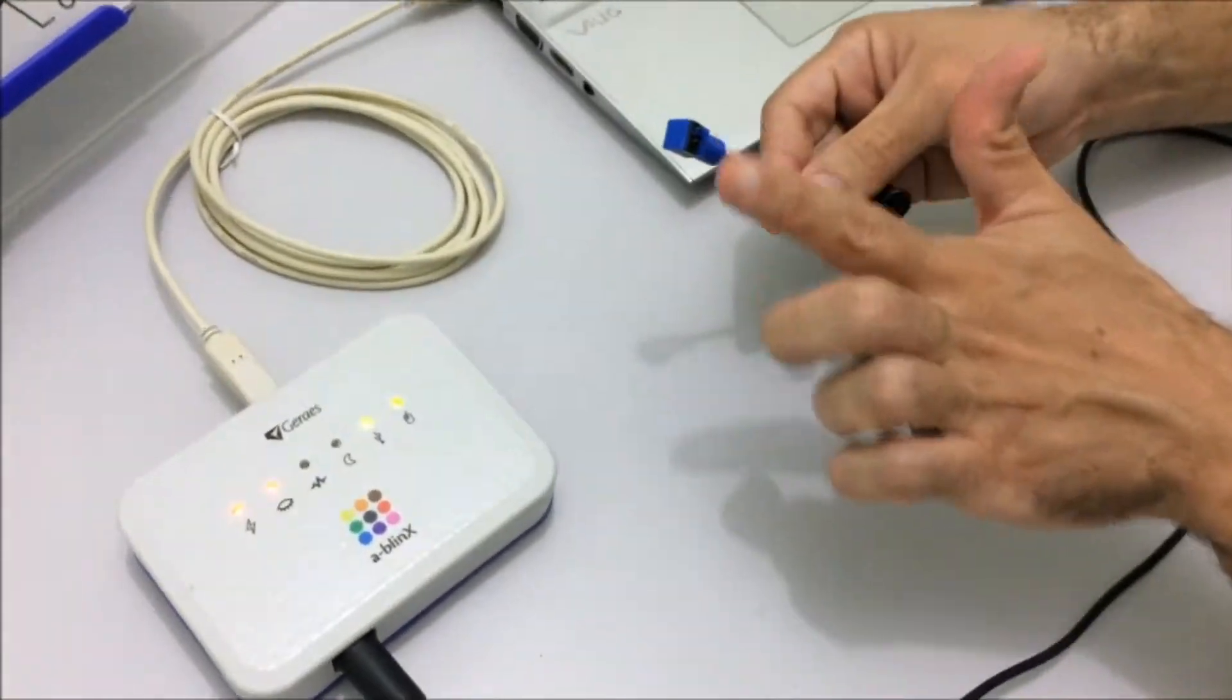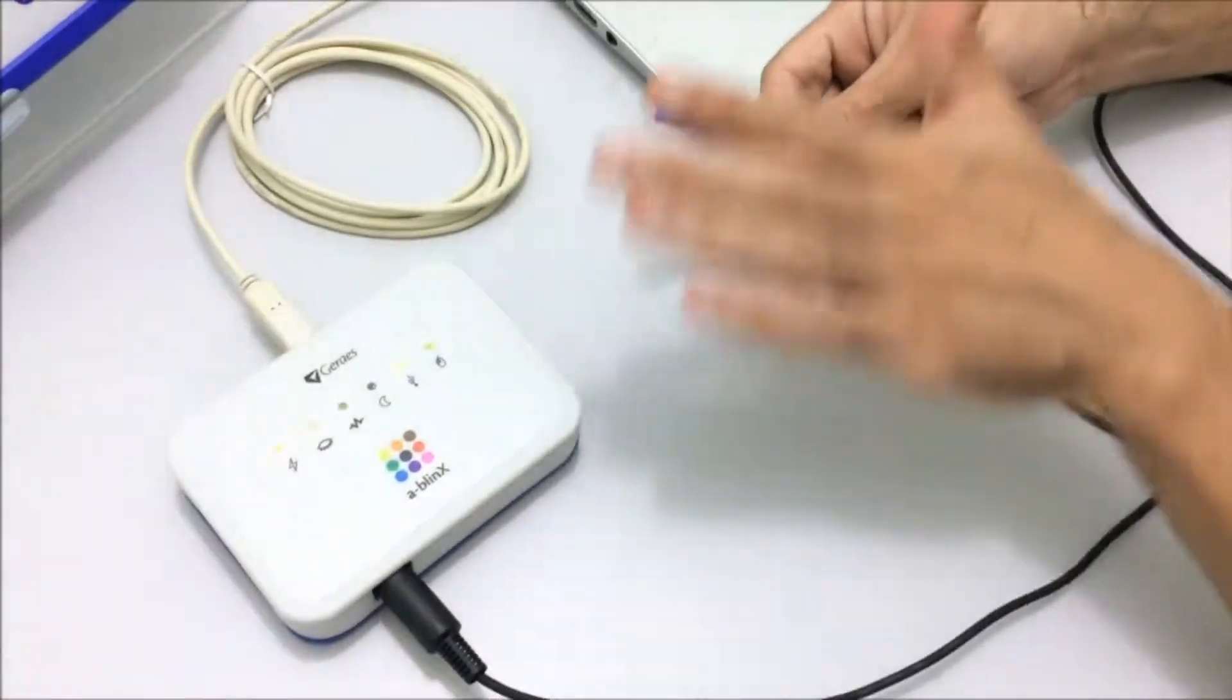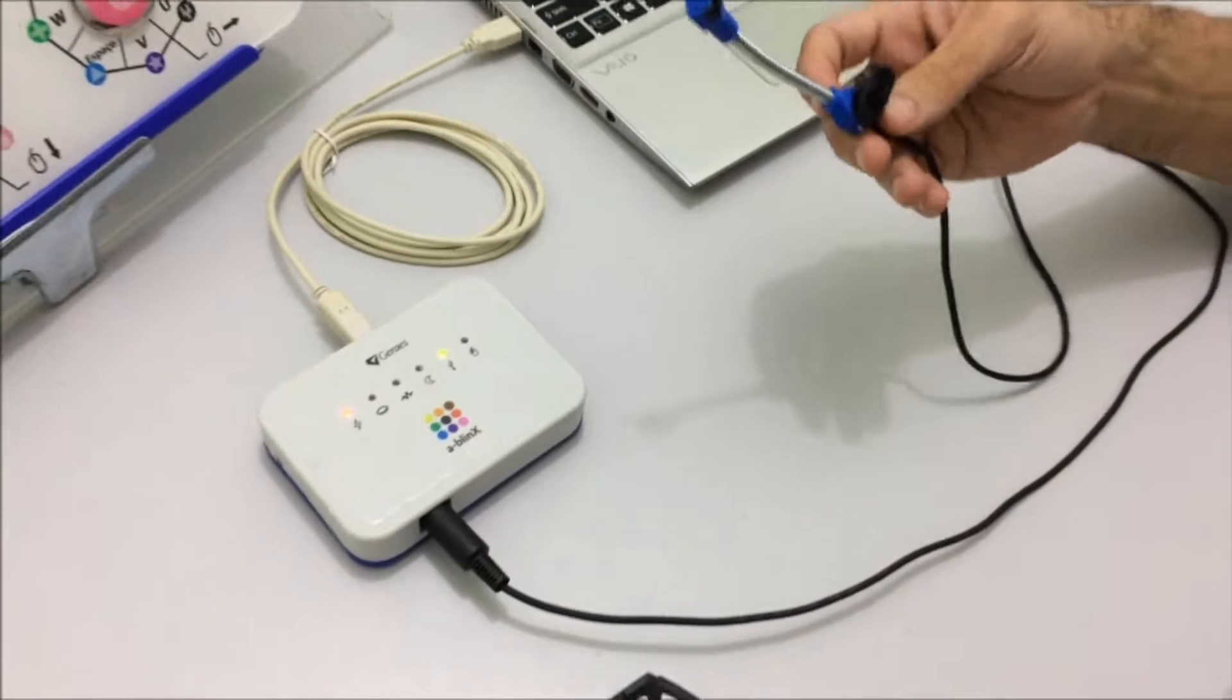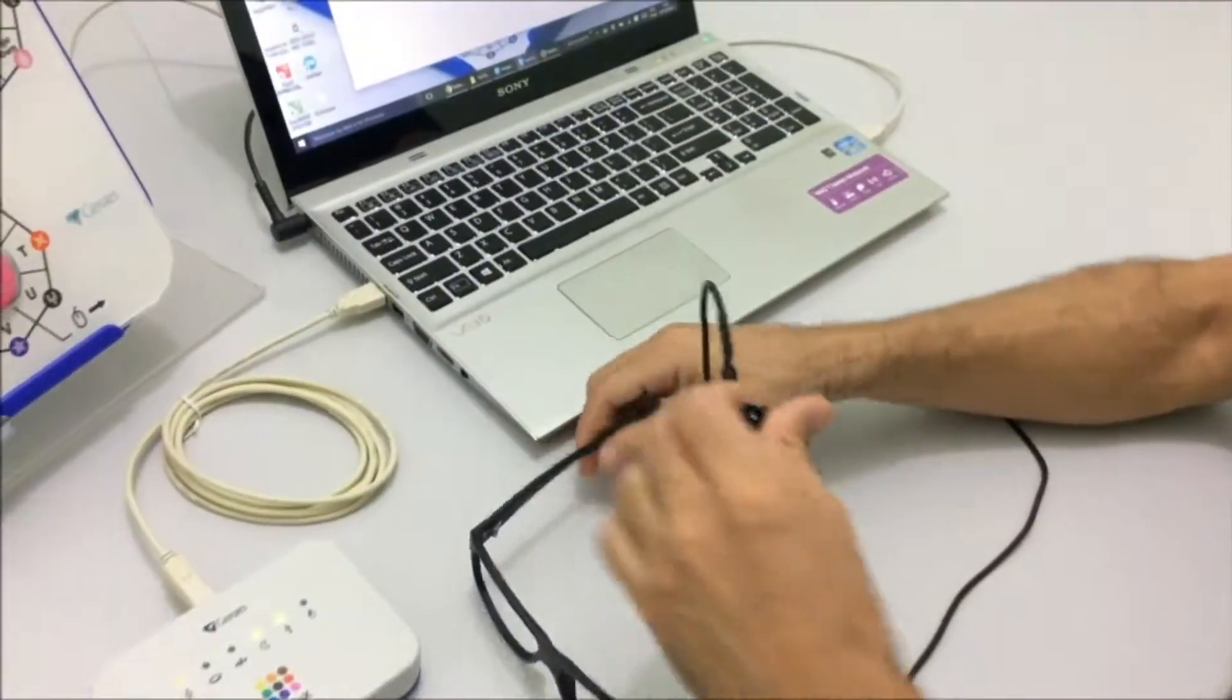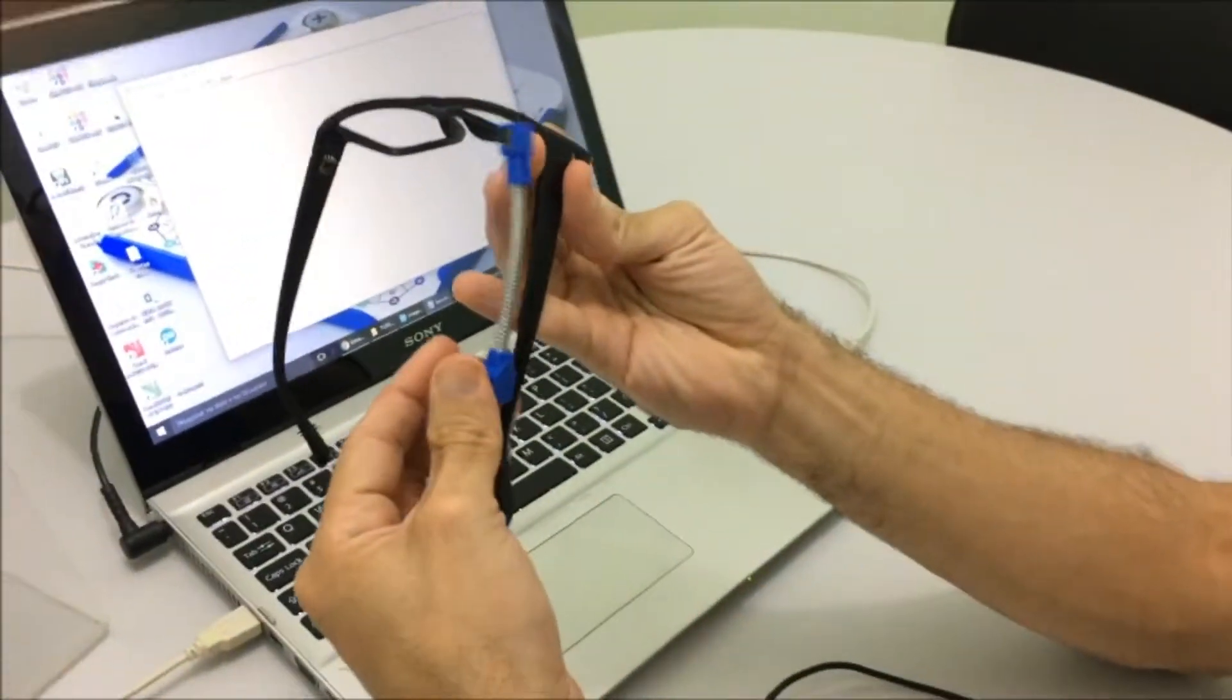Plug it in all the way, and to test if it's working, you can just wave your hand in front of the sensor. You can notice that every time I pass the hand in front of the sensor, it signals it by flashing its lights and beeping. It means that it's able to detect the eye blink.